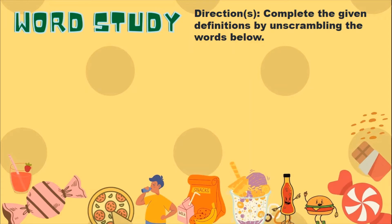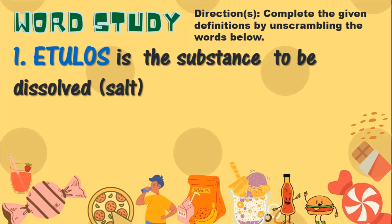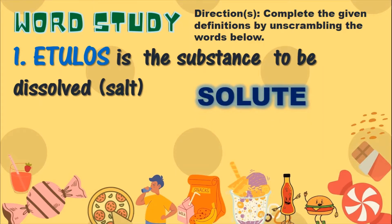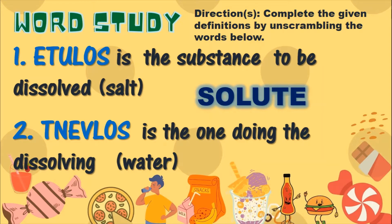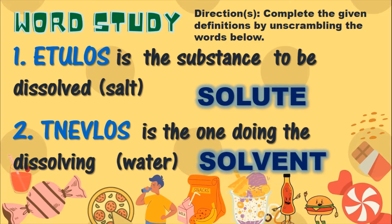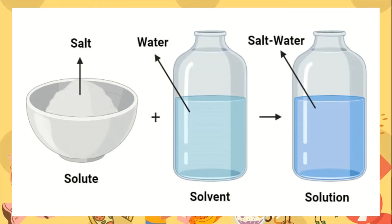Complete the given definitions by unscrambling the words below. Number one: it is the substance to be dissolved — example is salt. Can you guess? Solute. Number two: it is the one doing the dissolving — example is water. Can you guess? Solvent. In this picture, the salt is the solute and the water is the solvent.